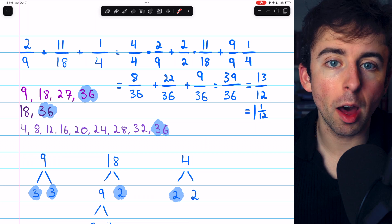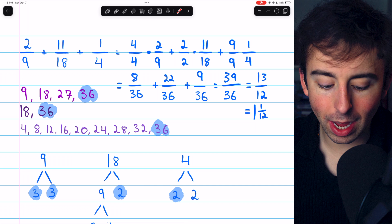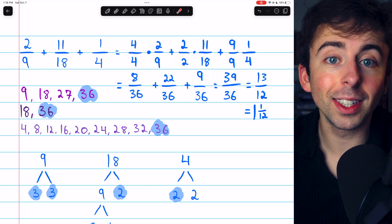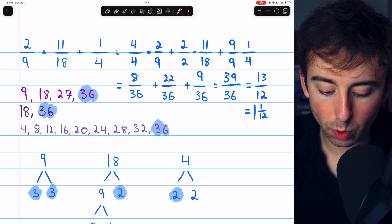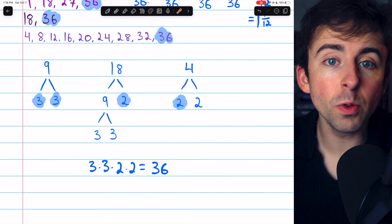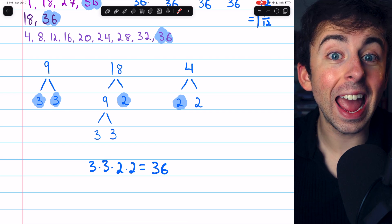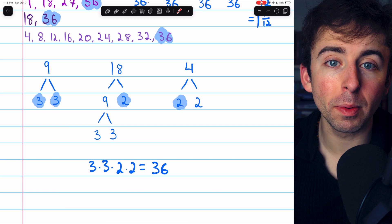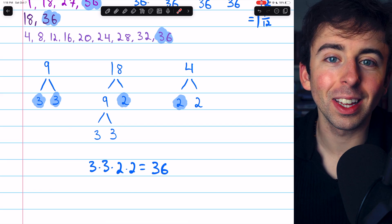You need to get a common denominator. And in order to do that, you can list out the multiples of the denominators you've got to find the least common multiple. Or you can use the prime factors. Now, you don't have to use the least common multiple. Any common multiple will do. But if you use the least common multiple, that'll keep your numbers a little bit smaller.